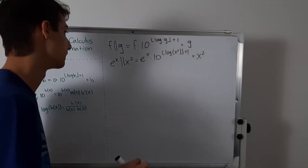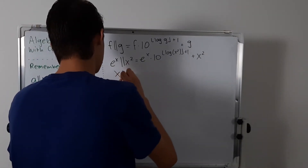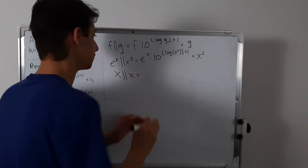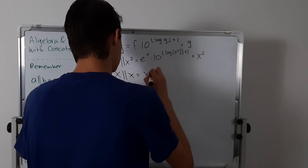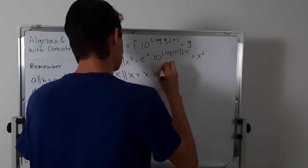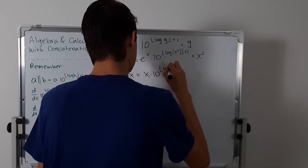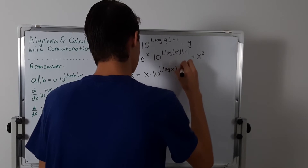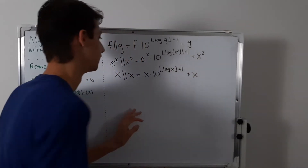We could go more basic and just say x concatenated with x. This is just going to be x times 10 to the floor of log of x, plus 1, plus x.